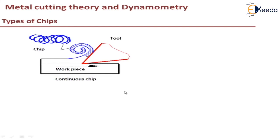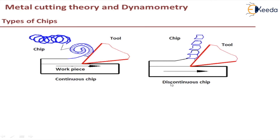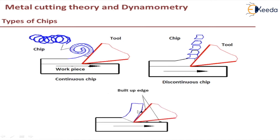Here you can see the continuous chip — a continuous ribbon-like chip which is formed. Then you have discontinuous chips, which are small segments of chips being formed. And then you have a continuous chip with built-up edge. We'll start with the continuous chip.